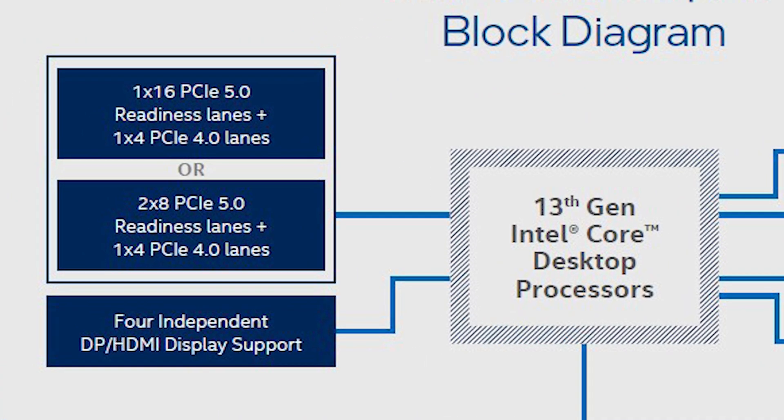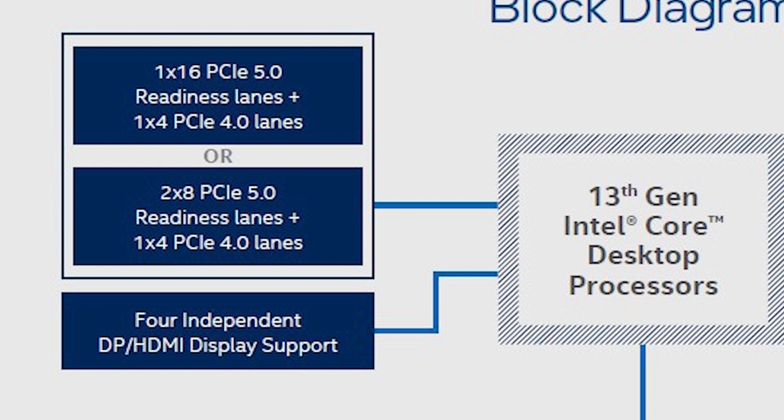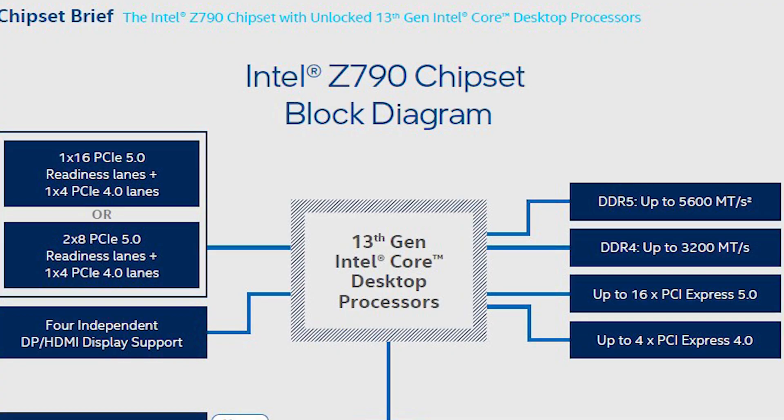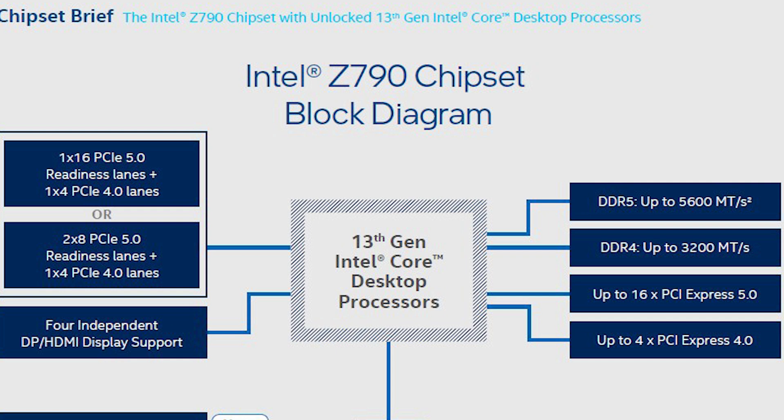Now let's go over to the Intel Z790 block diagram. You're going to notice mostly the same information, especially on the left side. The key difference on the right side is DDR5 is now up to 5,600 megatransfers per second, while DDR4 remains at 3,200 megatransfers per second. From the processor side, it also powers up to 16x PCI Express 5.0 and a 4x PCI Express 4.0.